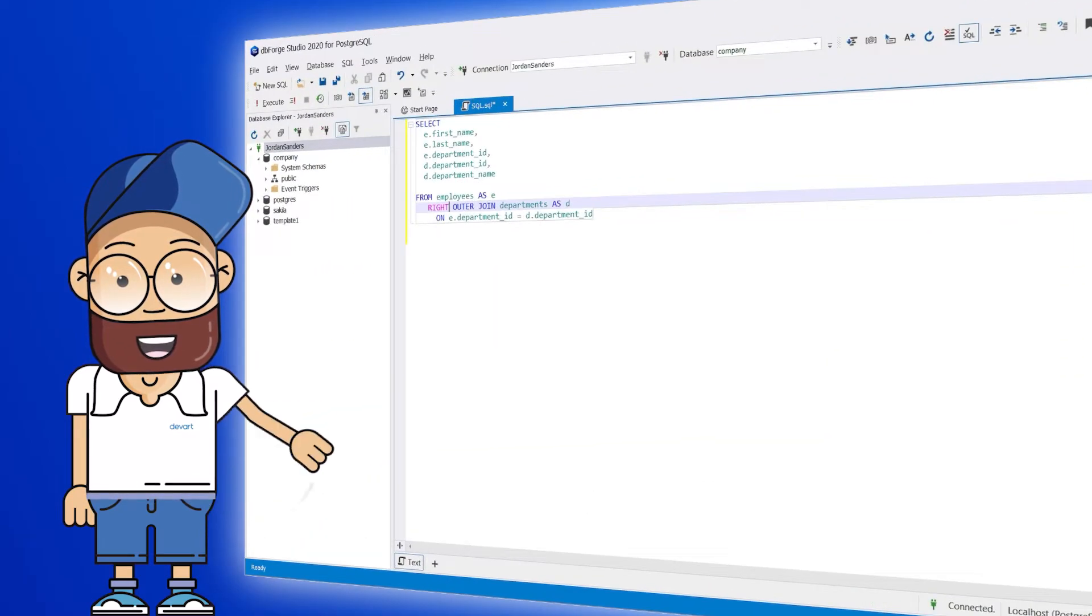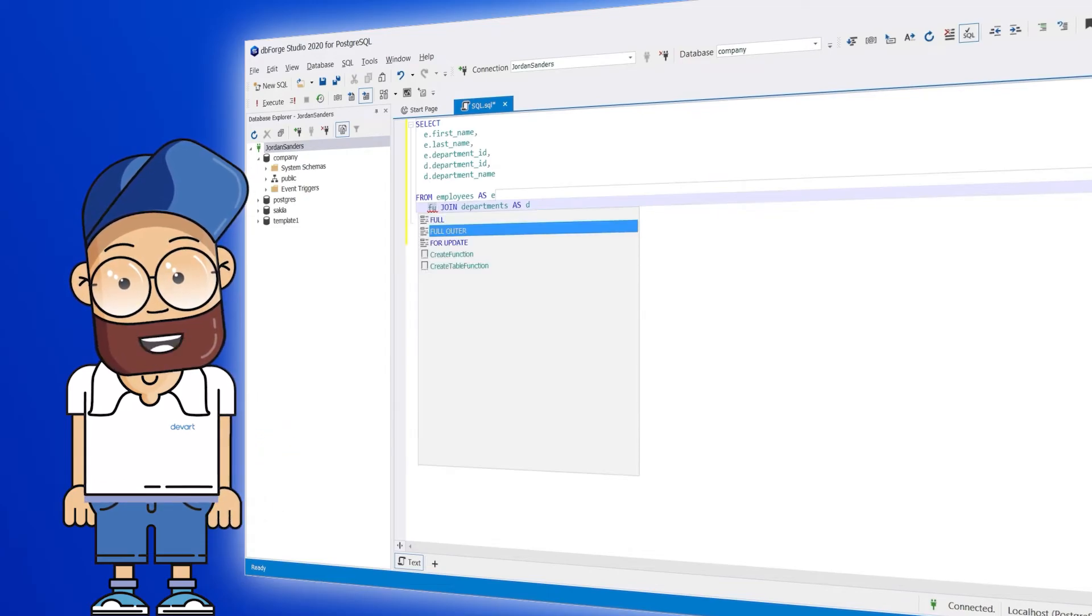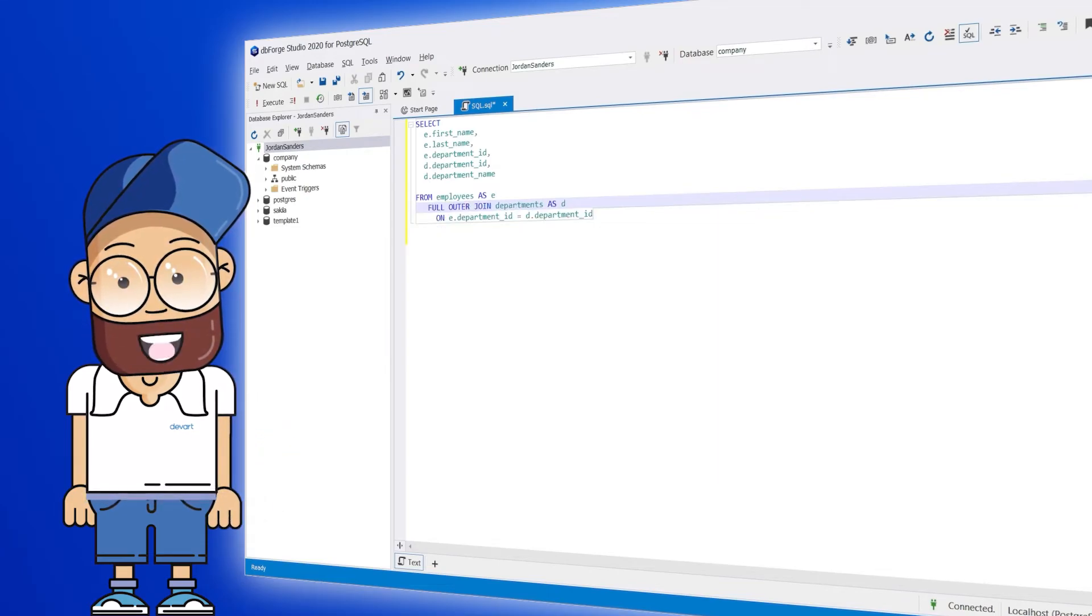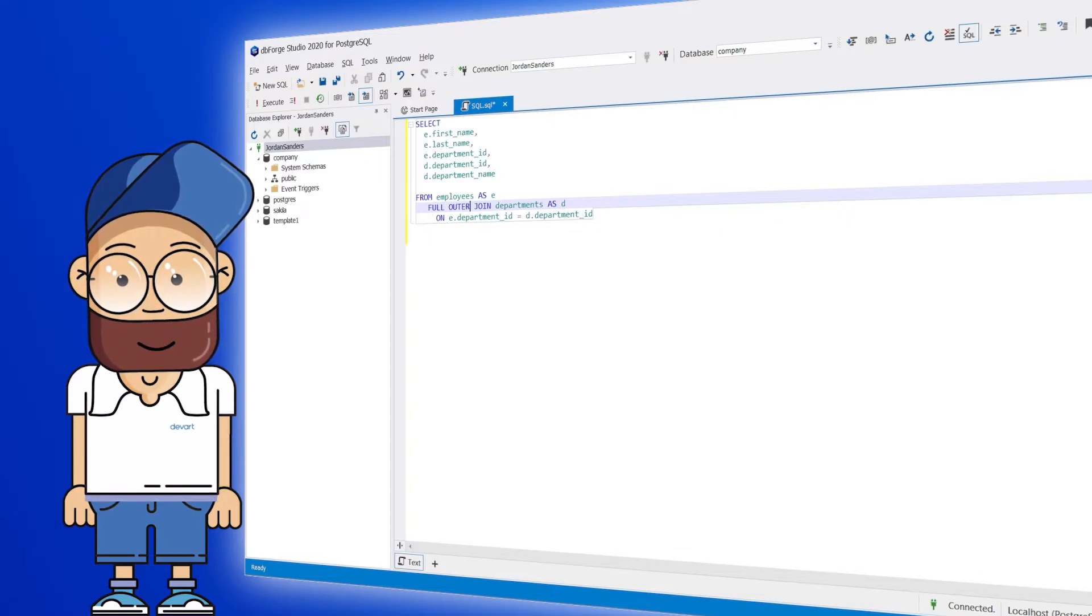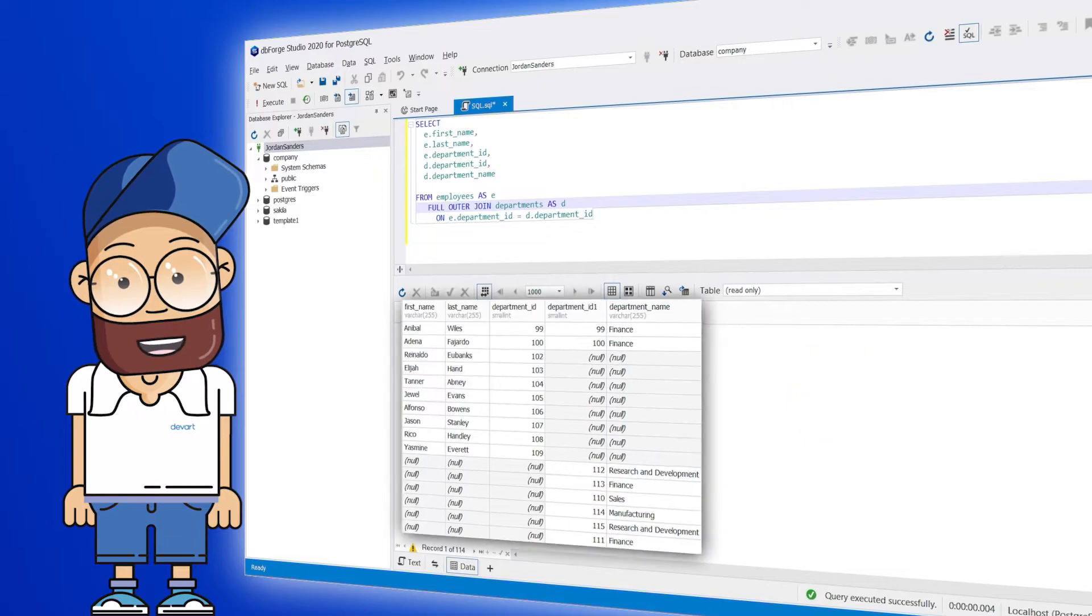Using dbForge Studio for Postgres, we can create a query to find all employees and their departments, as well as all departments and their employees, but also the employees who do not belong to any department, and the departments that have no employees. Now we run the query to see the result.